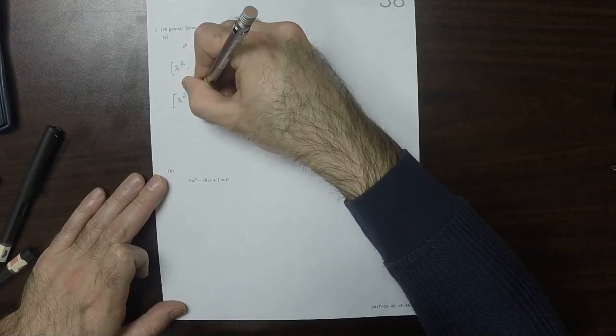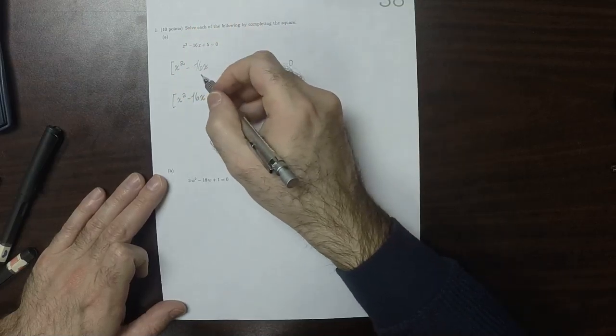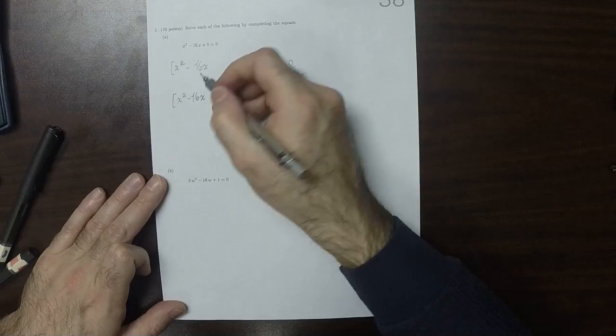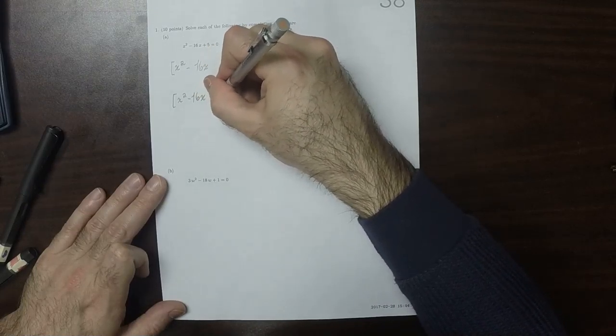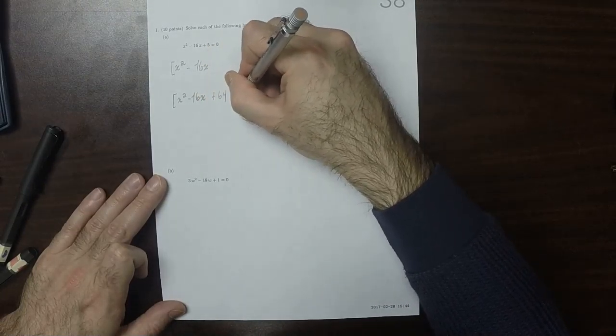So x squared minus 16x. And half of 16 is 8, squared is 64. So add 64, subtract 64.